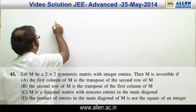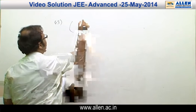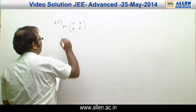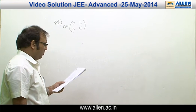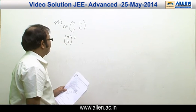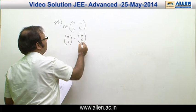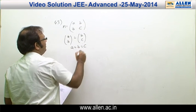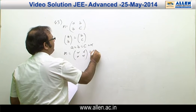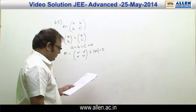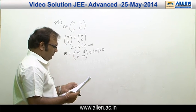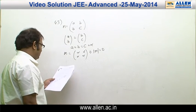In question 43, we are given a 2×2 symmetric matrix M with integer entries. Let us assume it is [[a, c], [c, b]] (since symmetric). For option a: the first column of M equals the transpose of the second row. The second row is [c, b]; its transpose gives c = a and b = c, so all entries equal some α, making M = [[α, α], [α, α]]. The determinant of M = 0, so M is not invertible. Since the question states M is invertible, option a is incorrect.